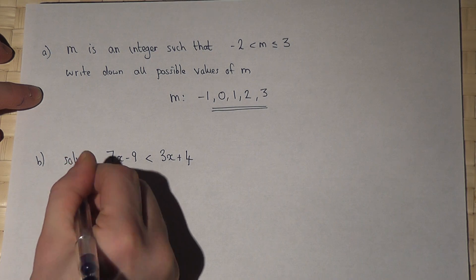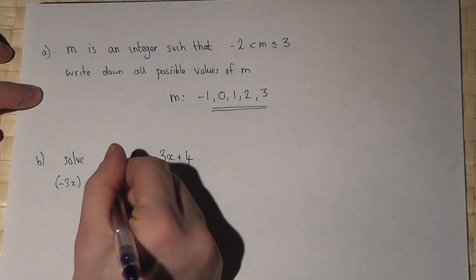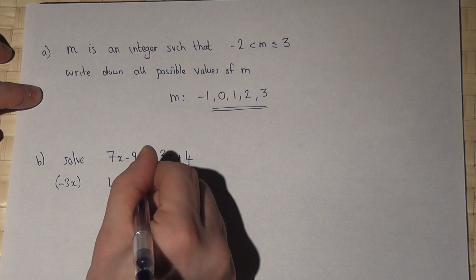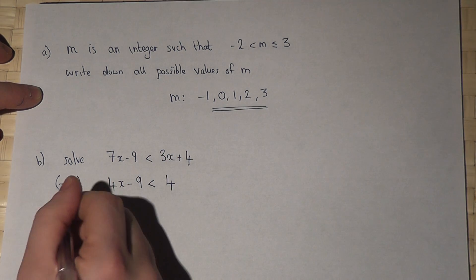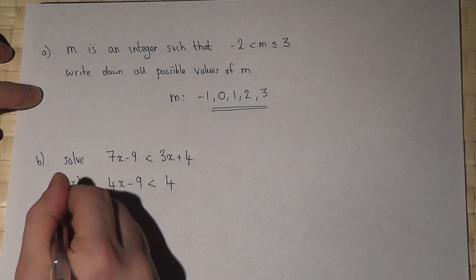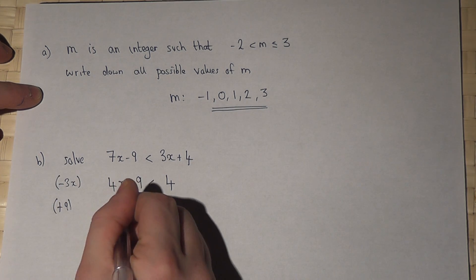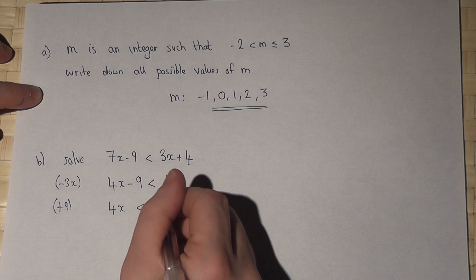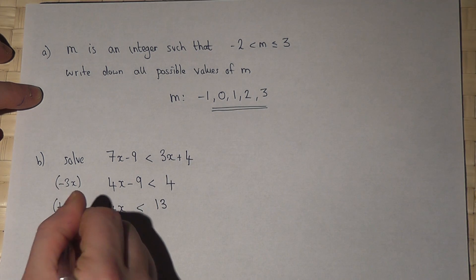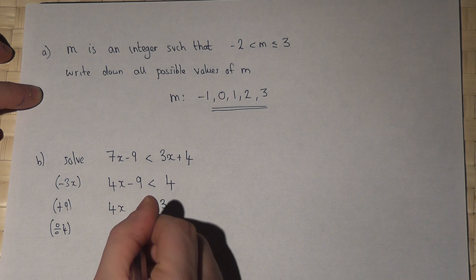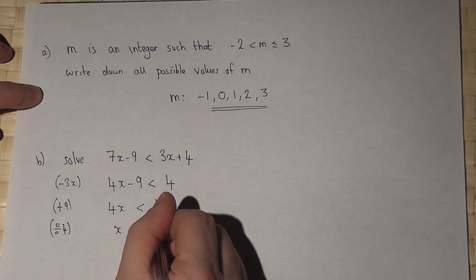If I take away 3x from both sides I get 4x - 9 is less than 4. If I then add 9 to both sides then 4x is less than 4 plus 9 equals 13. If I then divide by 4 I get x is less than 13 over 4.